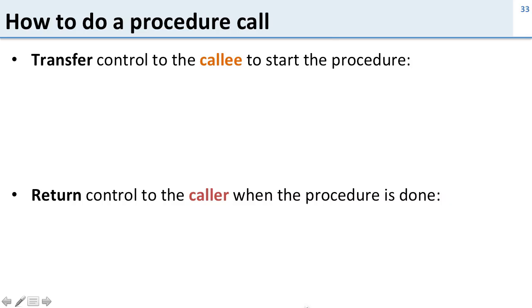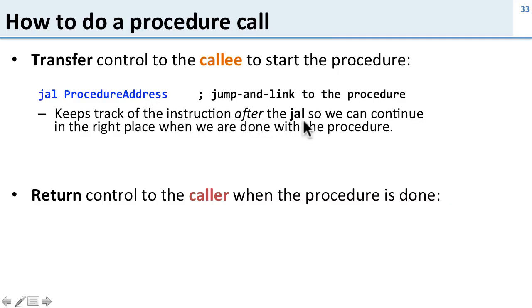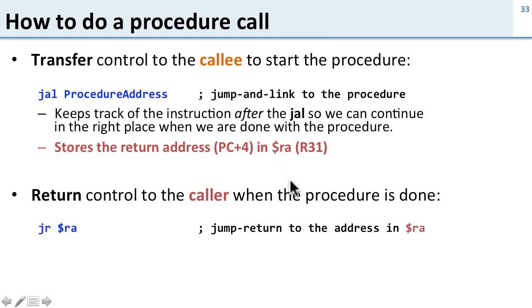Now how do we actually do the procedure call? We need to transfer control to the callee to start the procedure, like a jump or branch. Then when we're done we need to return to the caller. This jump depends on where you were called from - we need to remember who called us so we know where to go back to. The way we do this is with the jump and link command. What this does is it keeps track of the instruction after it so that when we're done we can go back to where we started from. It stores the return address - it stores PC plus 4 in register 31 which has the abbreviation RA for return address. When we're done to go back we call jump return register address RA and this will jump us back to the address in RA.